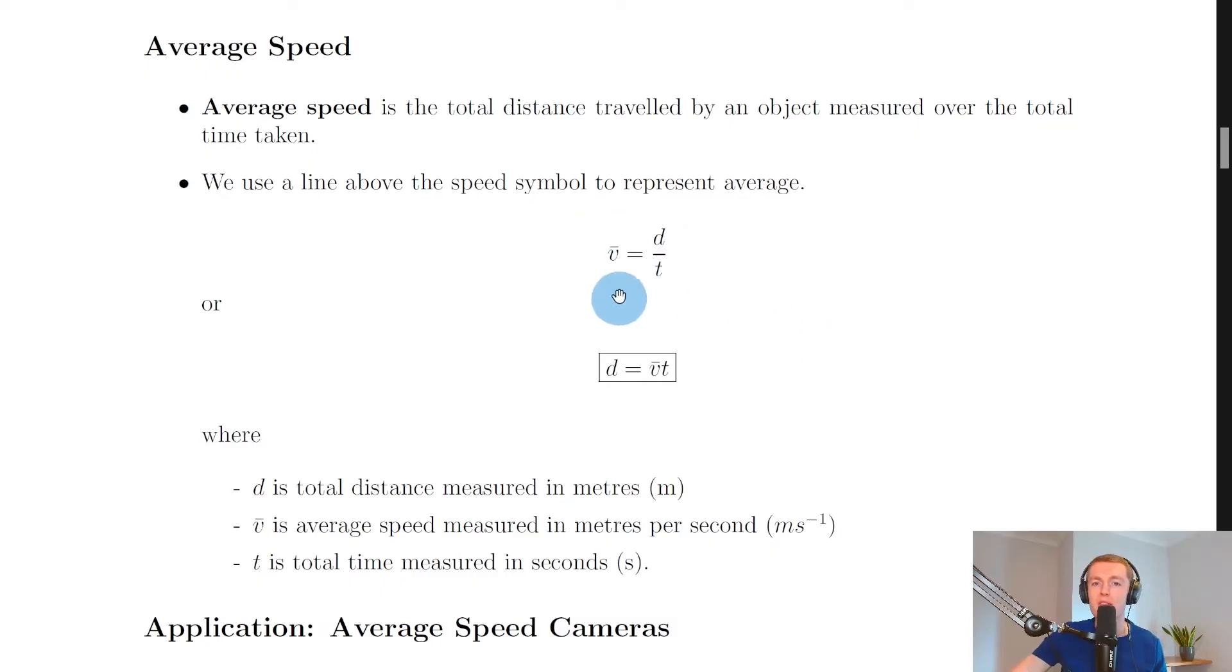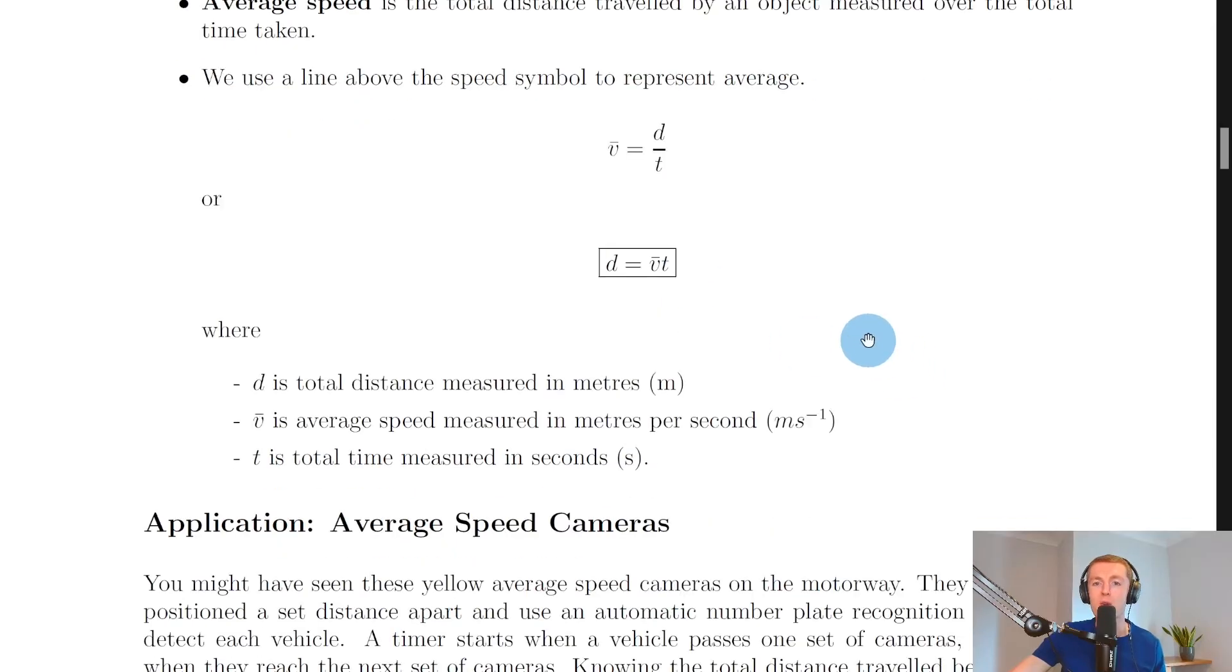So we have v-bar equals d over t - that's average speed equals distance over time. Or in the form that you'll get on the relationship sheet in the exam, is distance equals average speed times time. So we have d equals v-bar times t, where d is total distance measured in meters, v-bar is the average speed measured in meters per second, and t is total time measured in seconds.